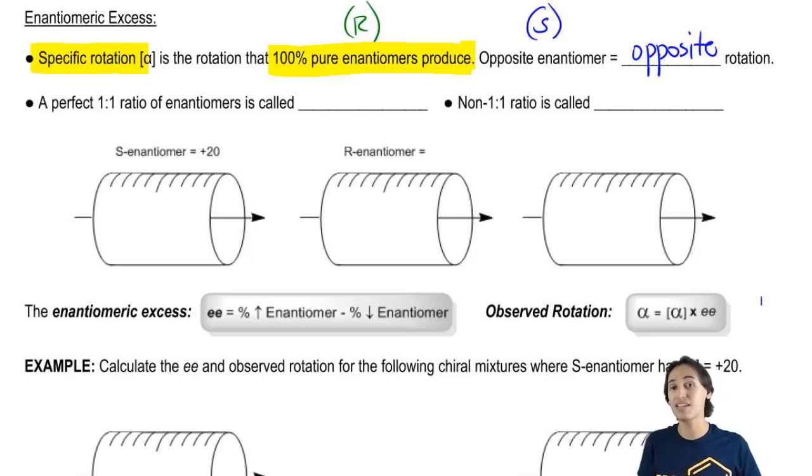Second thing is that we can mix enantiomers. It doesn't always have to be 100% pure solution. And in fact, for most of these questions, it never will be. Your professor is going to give you some kind of mixture and you're going to have to figure out what the optical activity is at the end.